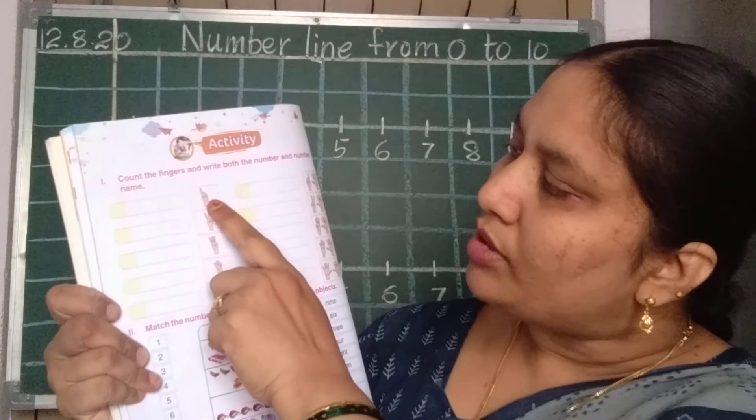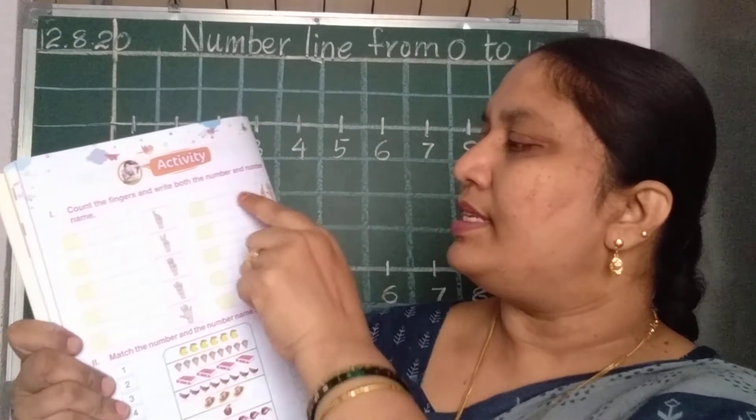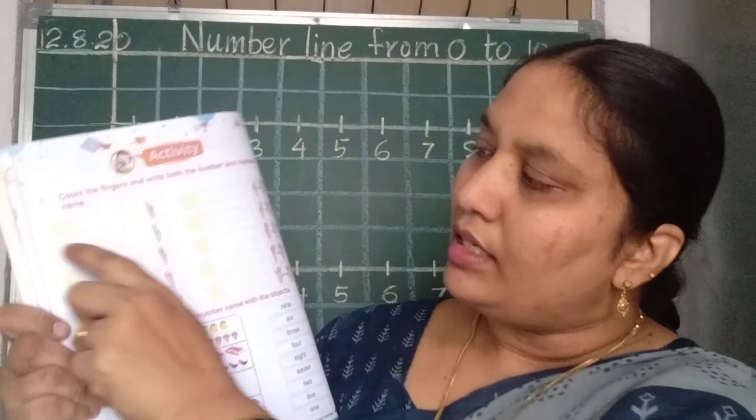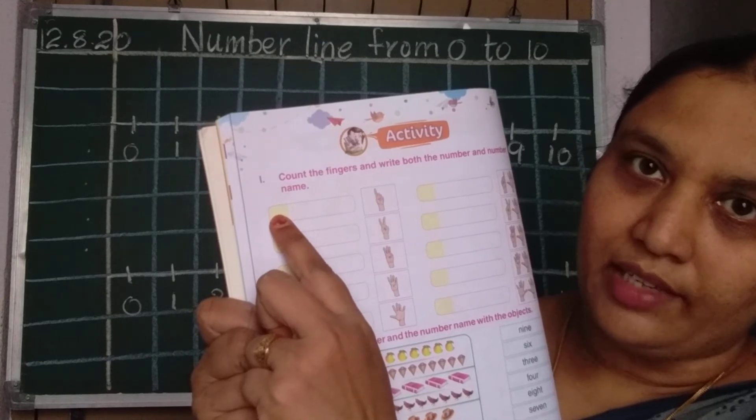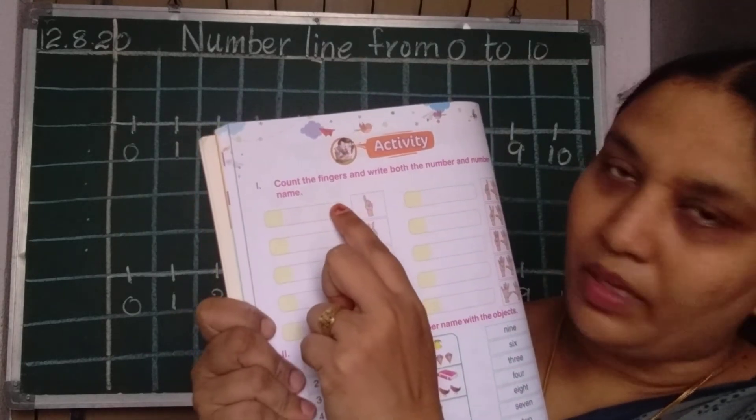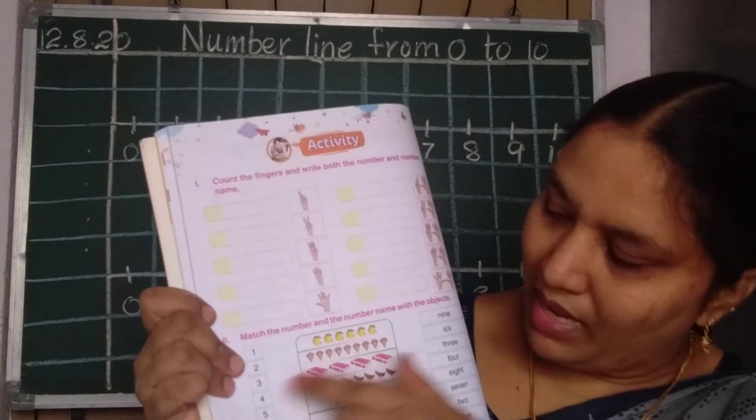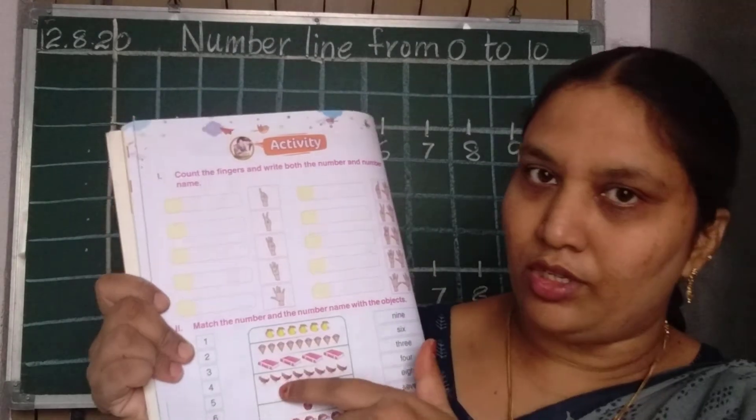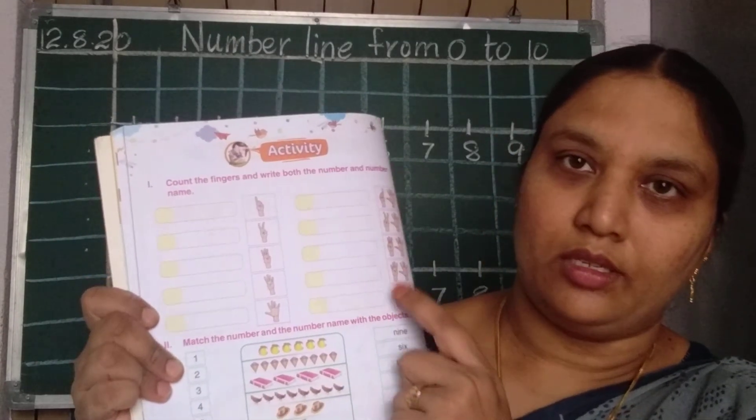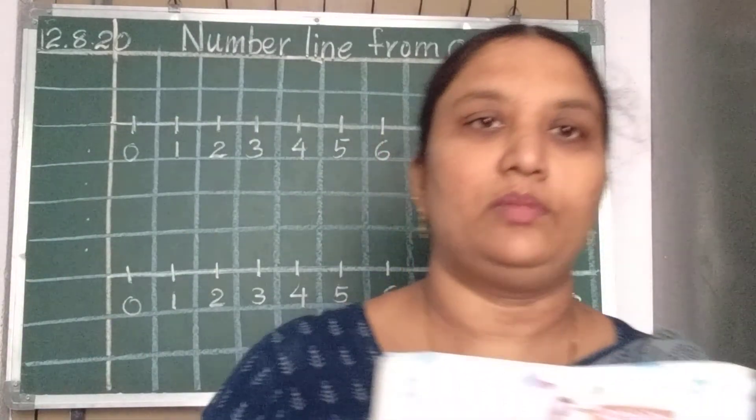What you should do: you should count how many fingers, 1, 2, 3, 4, 5, 6, 7, 8, 9, 10. Here yellow place it's given, there you should write the number, and here you should write the spelling from 1 to 10. And after doing this, this is matching, here you should do. Count and match from the number and the number names. This page you have to do. After doing this, okay children, goodbye, bye.